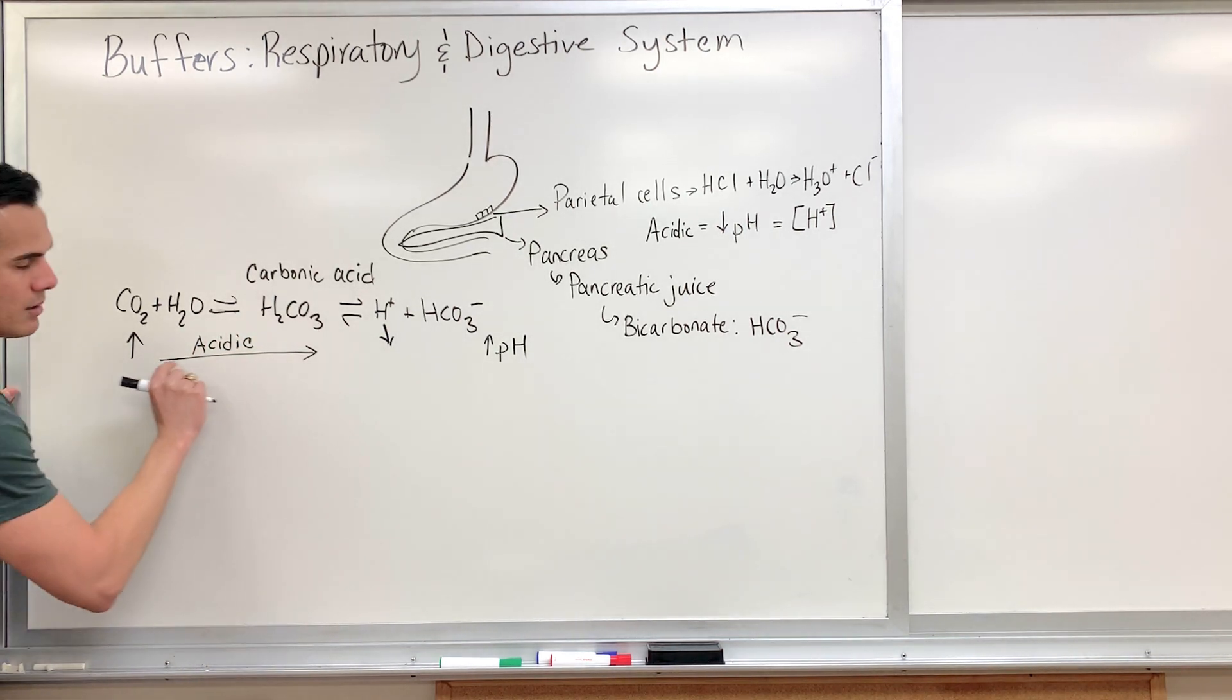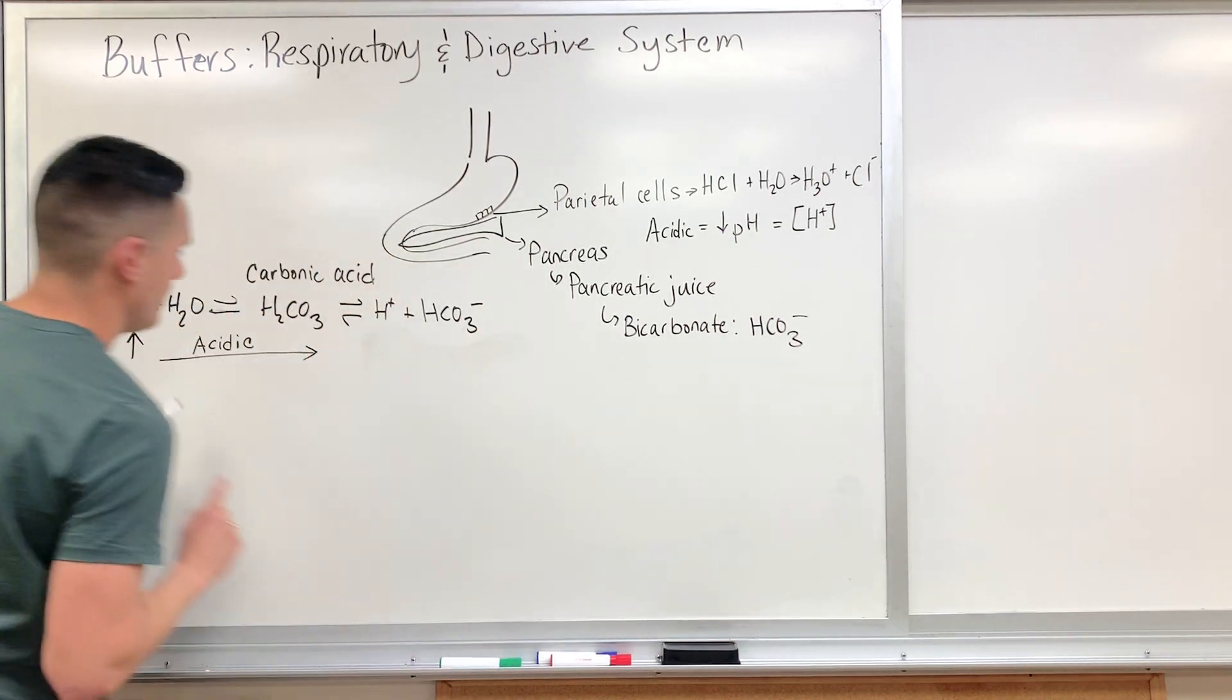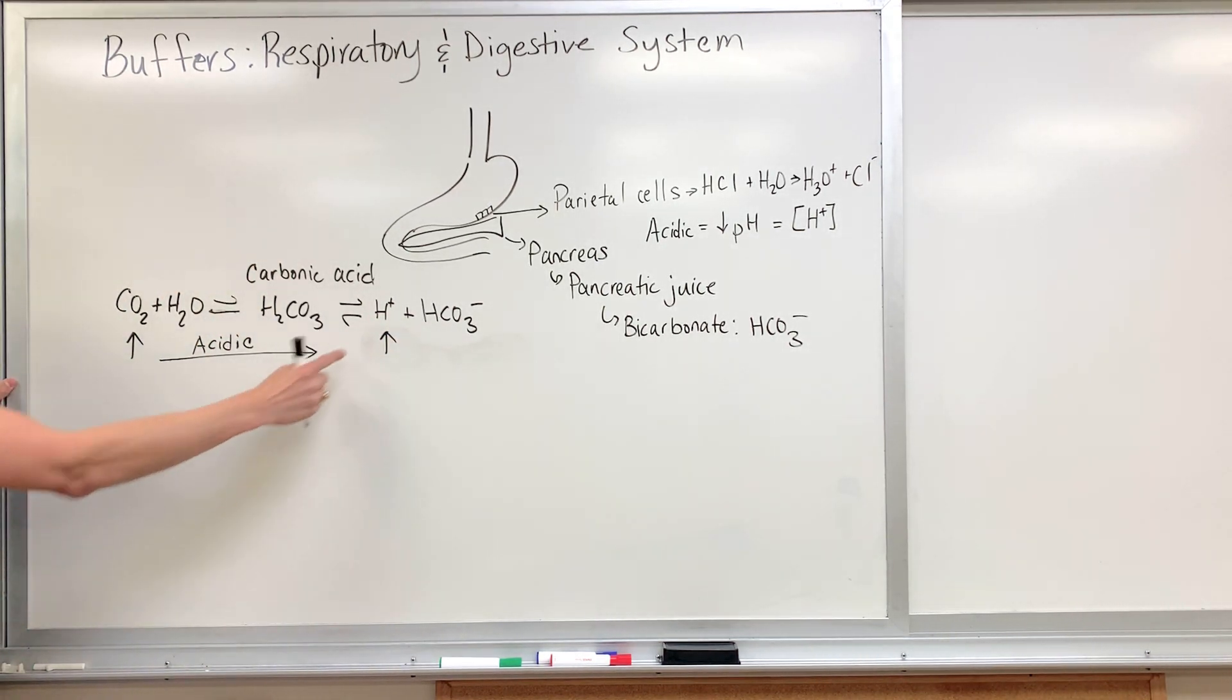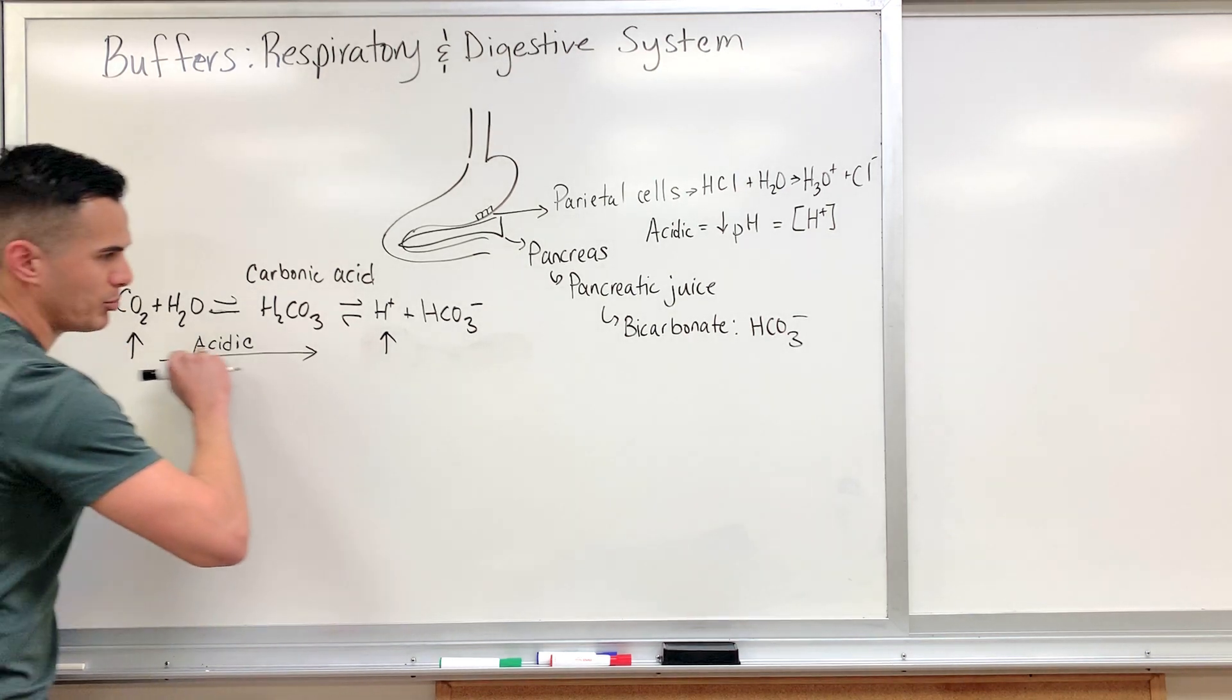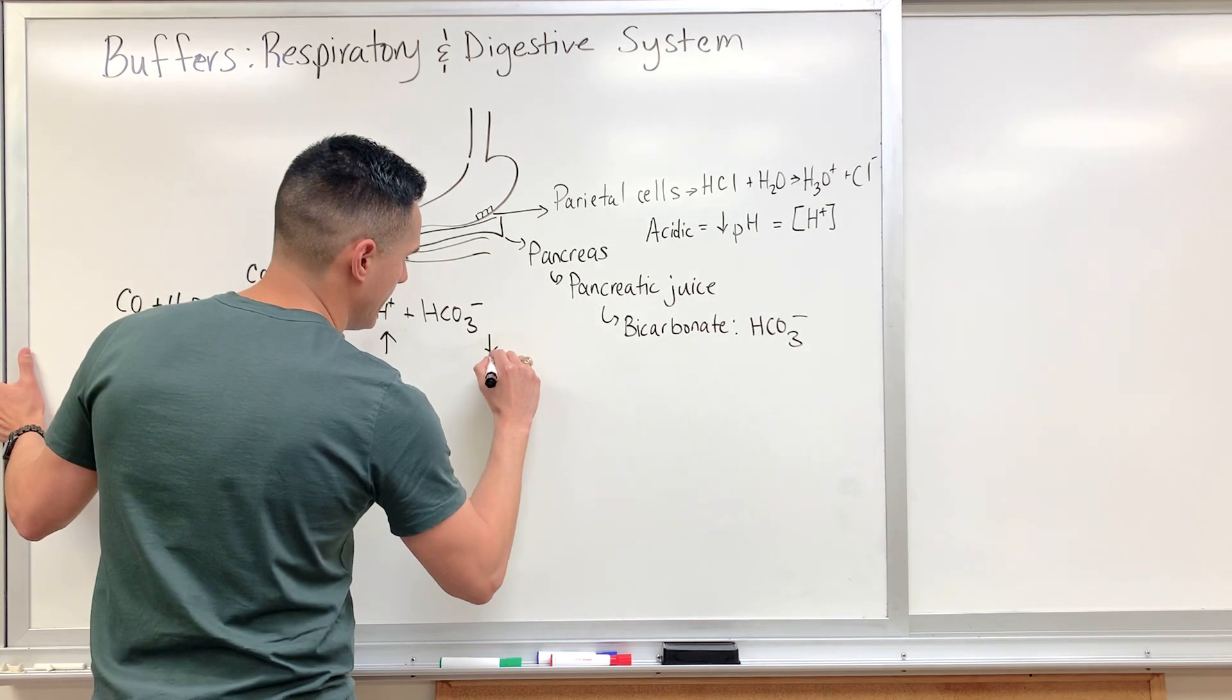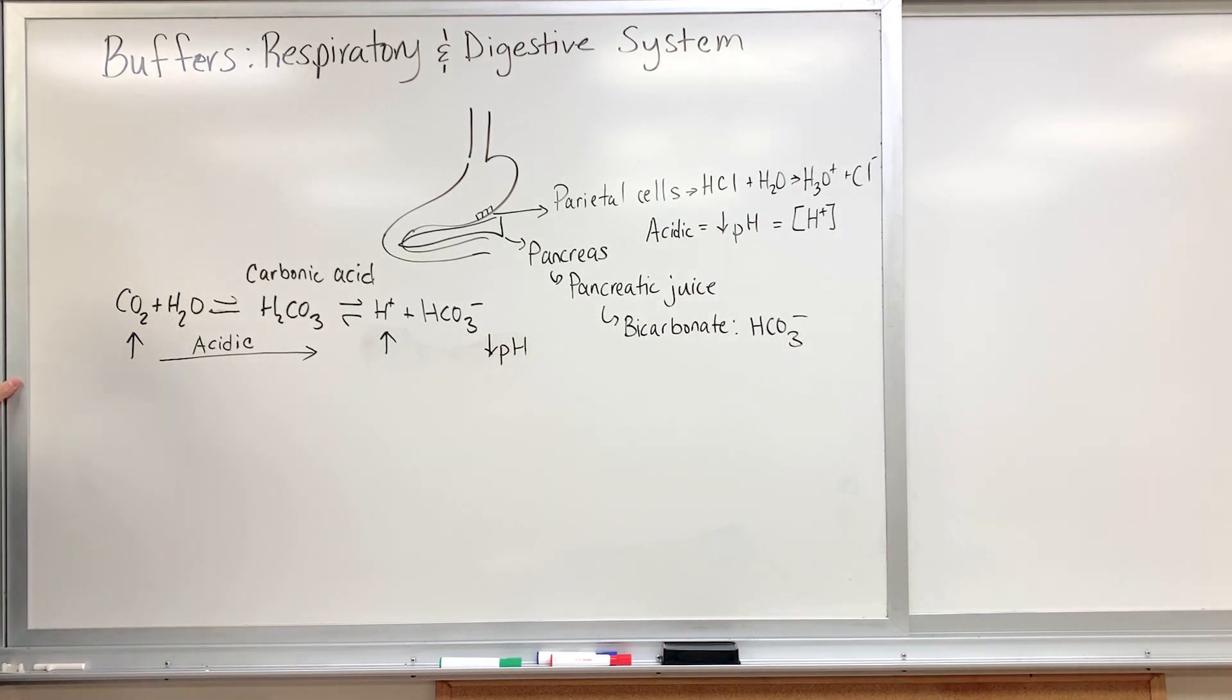It becomes more acidic because we're increasing the amount of protons, because of a principle known as Le Chatelier's principle. As we increase the CO2, it'll push the equation this way. Therefore, our pH is going to decrease, we'll have a higher concentration of protons, and the blood becomes more acidic.